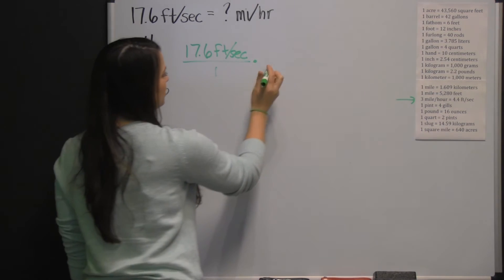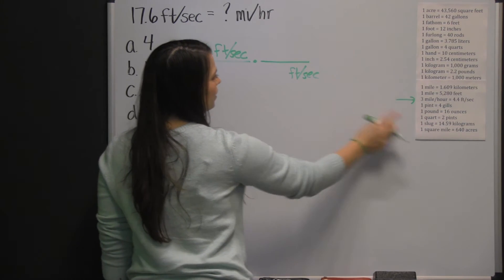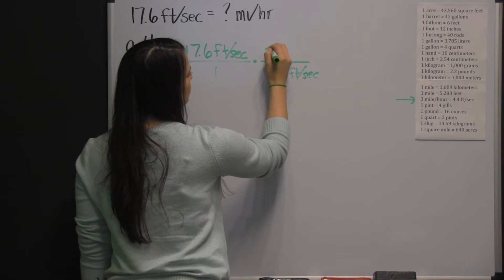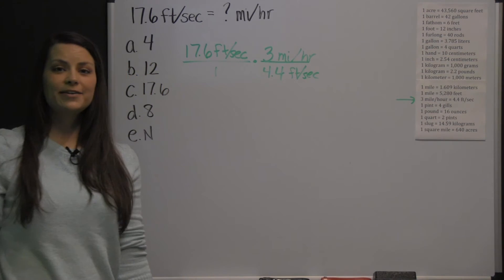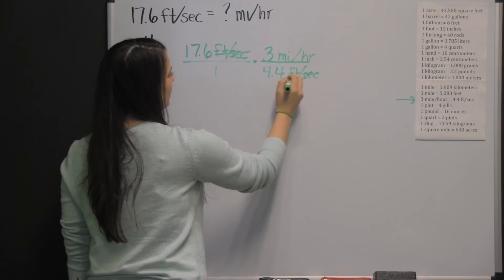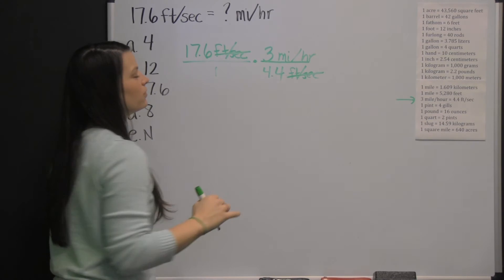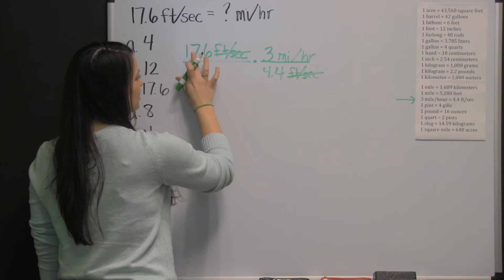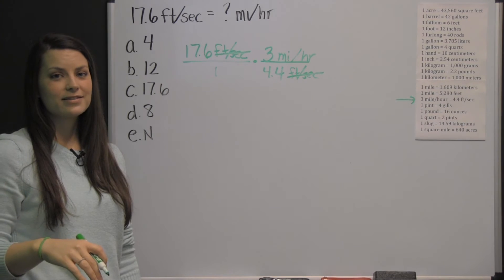We want our feet per second to cancel, so we need to put those in our denominator. Four and 4 tenths feet per second is 3 miles per hour. Since we're multiplying fractions, our diagonal units cancel — feet per second cancels with feet per second. We can also cross-cancel with the 17 and 6 tenths and the 4 and 4 tenths: divide both by 4 and 4 tenths.